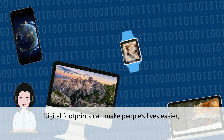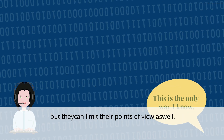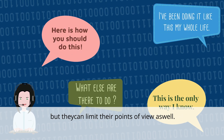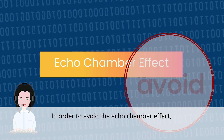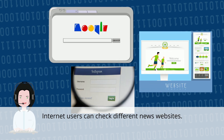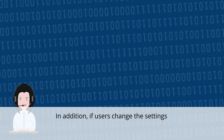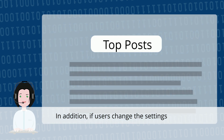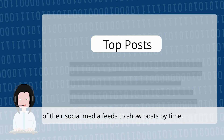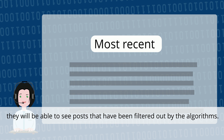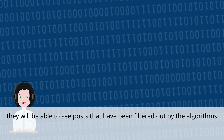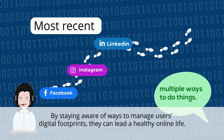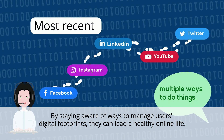Digital footprints can make people's lives easier, but they can limit their points of view as well. In order to avoid the echo chamber effect, Internet users can check different news websites. In addition, if users change the settings of their social media feeds to show posts by time, they will be able to see posts that have been filtered out by the algorithms. By staying aware of ways to manage their digital footprints, they can lead a healthy online life.